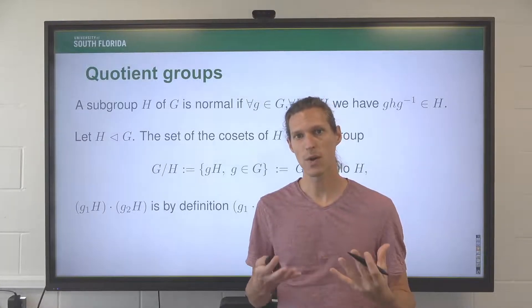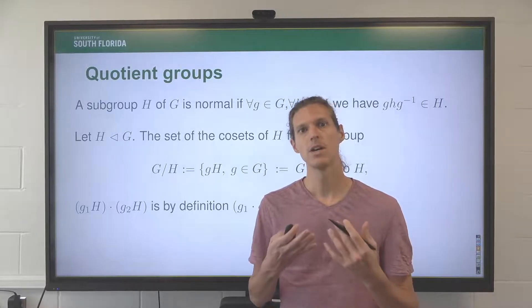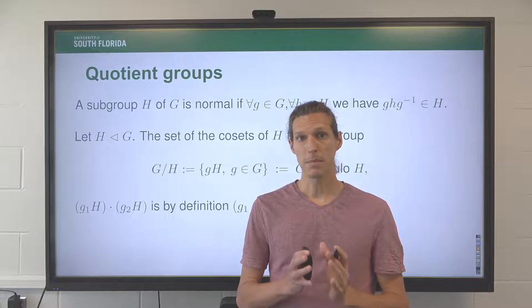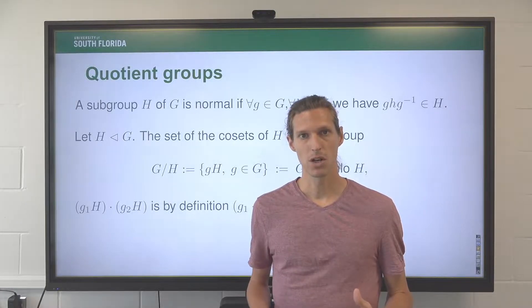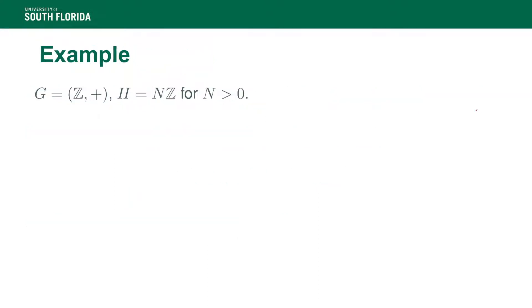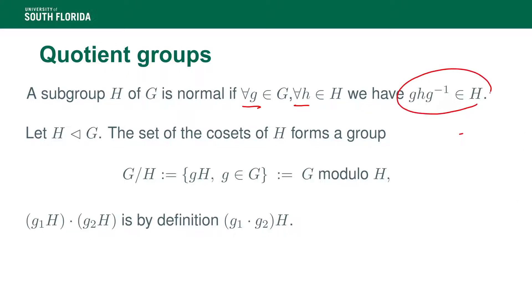Now, what we will need is to look at the structure that cosets have. For now we've described them just as sets, but if the subgroup is what we call normal, then the cosets form themselves a group. For that to happen, we need the subgroup to be normal, which means that for every G and every H, we need to have that GHG inverse is in H. So it means that H is stable by conjugation by elements of G.